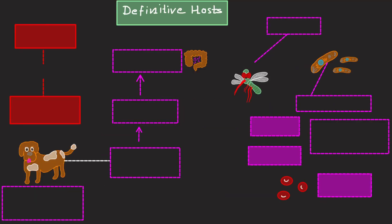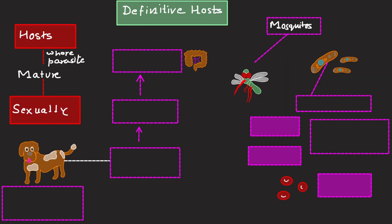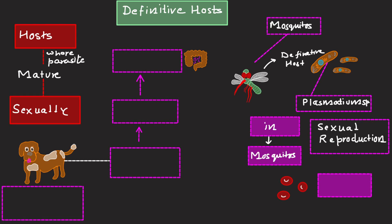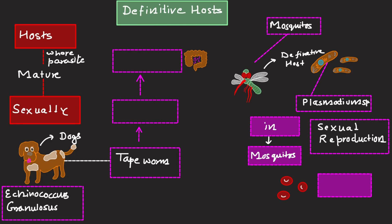Definitive hosts are those in which a parasite reaches maturity and, if possible, reproduces sexually. For example, mosquitoes serve as definitive hosts for Plasmodium species, the causative agents of malaria — the parasite completes its sexual reproduction cycle in mosquitoes. A second example is dogs for Echinococcus granulosus: dogs are the definitive hosts where the adult worm lives and reproduces inside the intestine.